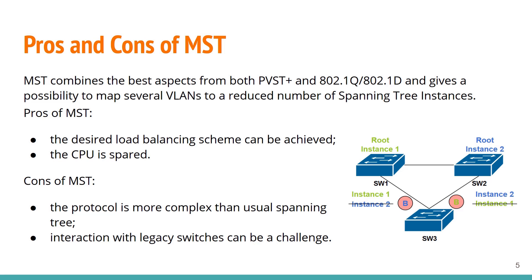Interaction with legacy switches can be a challenge. In our example, we have three switches. SW1 is the root bridge for instance 1 with VLANs 1 to 500 mapped. This instance is forwarding on the uplink from SW3 to SW1 and blocking on the uplink from SW1. The second instance has SW2 as root bridge with VLANs 501 to 1000, forwarding on the uplink from SW3 to SW2. With only two instances, we achieve load balancing and spare CPU cycles.